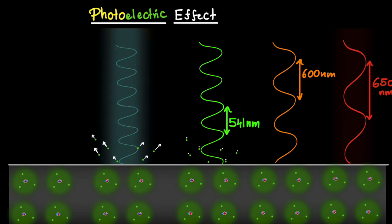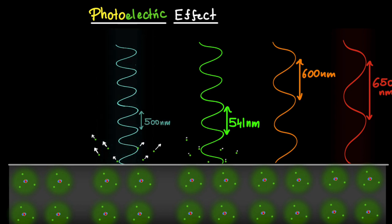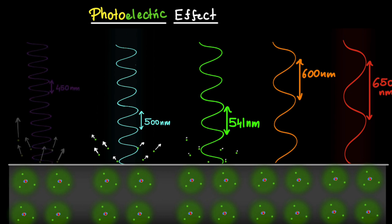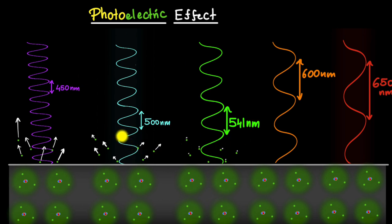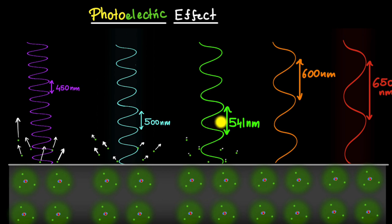If we reduce the wavelength further to blue light at about 500 nanometers, we get photoelectric effect and the electrons come out with even more energy. Reducing it further, electrons come out with even more energy still. So the observation is: if we lower the wavelength, electrons gain more energy. We can also talk in terms of frequency — bigger the wavelength, smaller the frequency. So: more the frequency, more the energy of the electrons.